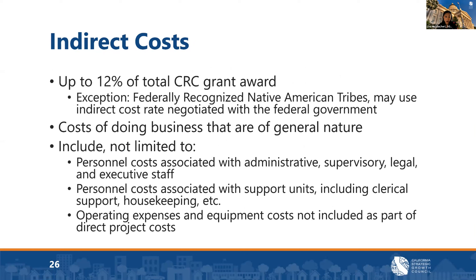Indirect costs may account for up to 12% of the total CRC grant award. This 12% maximum applies to all entities, including UC and CSU entities, except federally recognized Native American tribes. Indirect costs are costs of doing business of a general nature not directly tied to the grant but necessary for the general operation of the organization. These include personal costs associated with administrative, supervisory, legal, and executive staff; clerical support; housekeeping; and operating expenses not included as direct project costs — such as accounting, budgeting, audits, IT, janitorial, rent, utilities, and supplies. Documentation related to the indirect cost rate determination must be retained by the grantee for audit purposes.